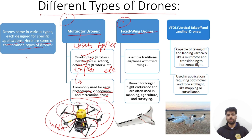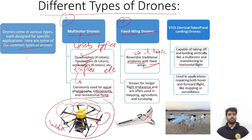The second type is fixed-wing drones, which look like a traditional airplane with fixed wings. They are known for longer flight endurance due to their aerodynamic stability and are often used in mapping, agriculture, and surveying.